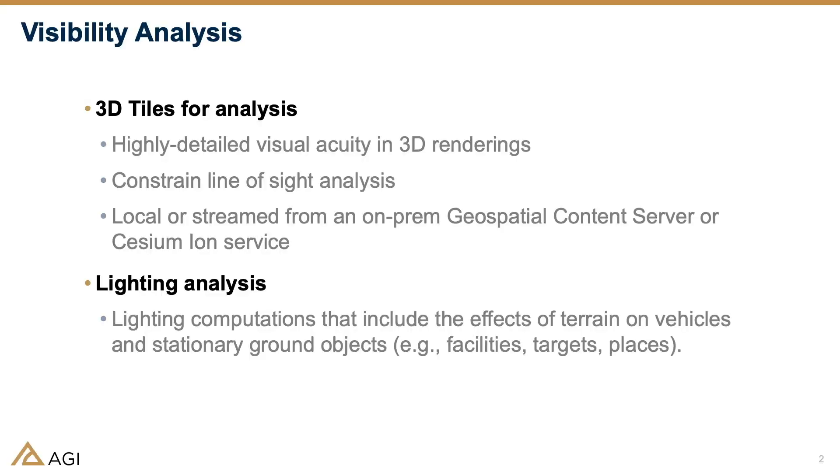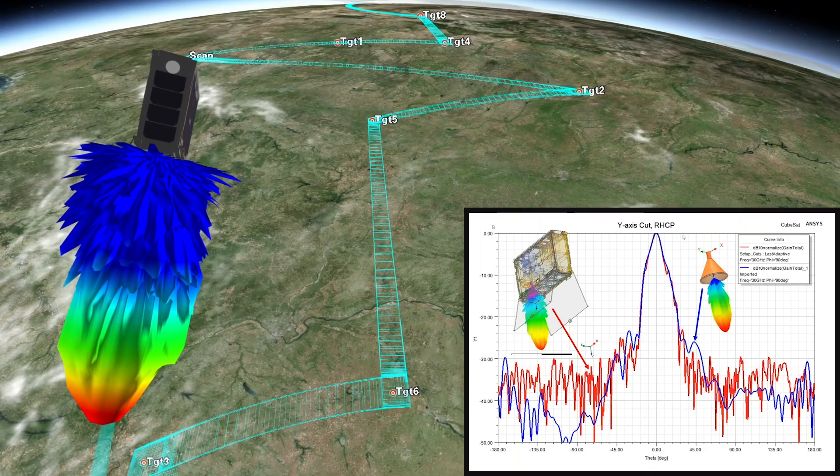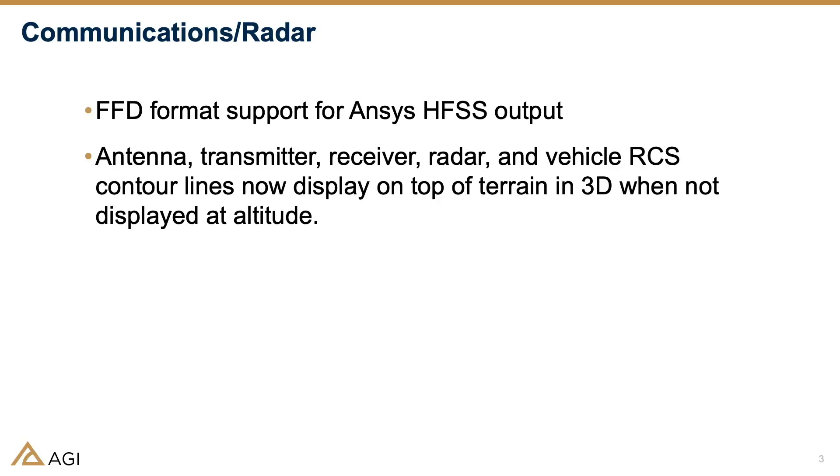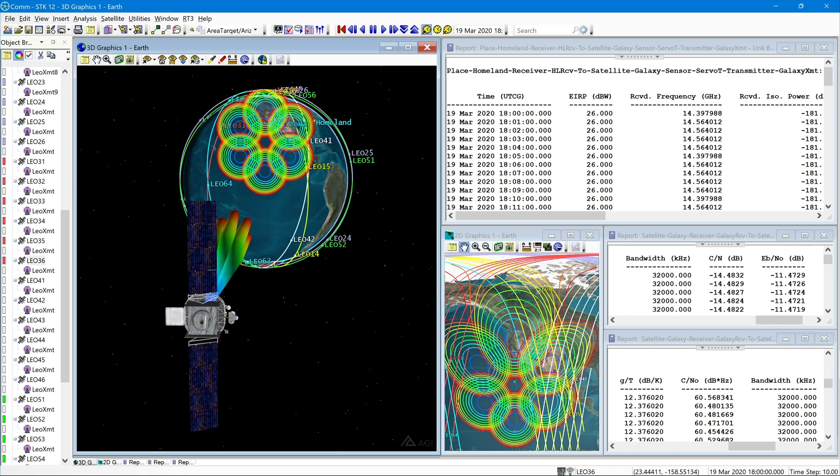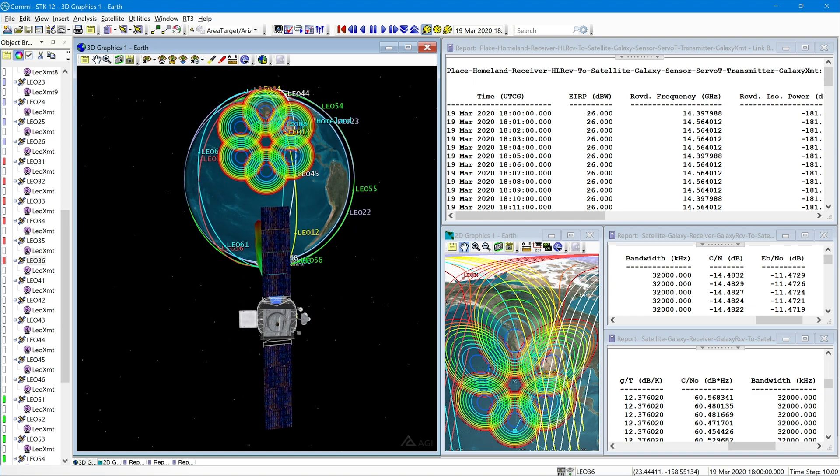For our communications users, or whether you're using communications or our radar package, we've expanded the ability to take advantage of external antenna data by adding support for the FFD format within STK. So if you work with any ANSYS HFSS output data, then you're able to import those complex antenna patterns directly into STK and use those as part of your analysis. Additionally, we've added a 3D component that had been missing for contour lines of various antennas within STK. You're now able to display those on top of 3D terrain in a 3D environment, so it gives you another visual confirmation of the analysis computations that are going on in the background with STK.